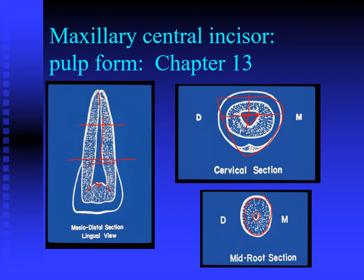As you study the incisors, also examine the pulpal characteristics and root form. Canines have proximal root depressions, and along with mandibular incisors, this can produce a kidney-bean or ribbon-shaped root — where proximal root depressions form a figure-eight or ribbon shape.